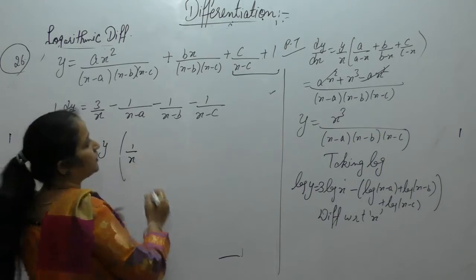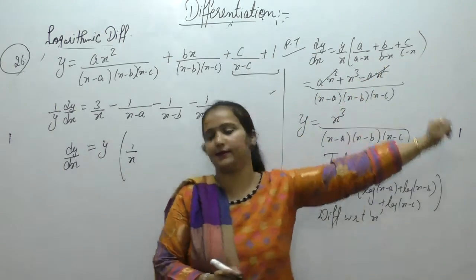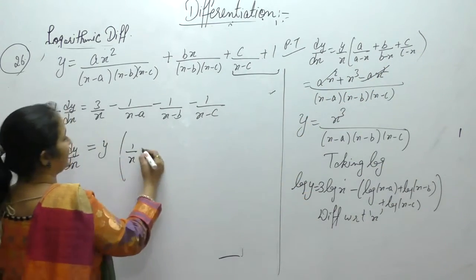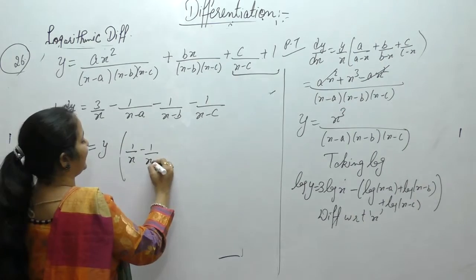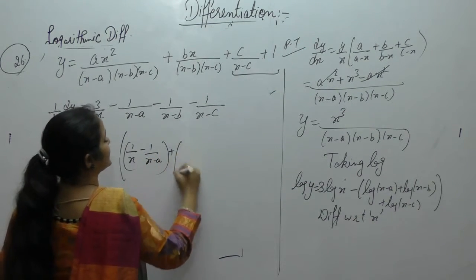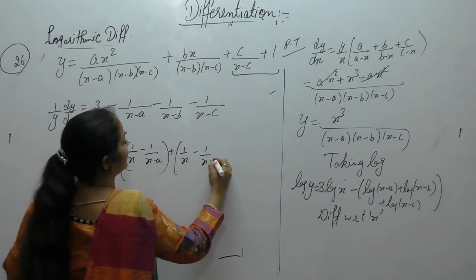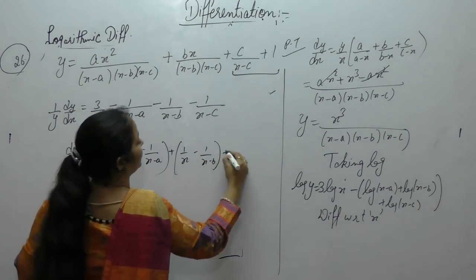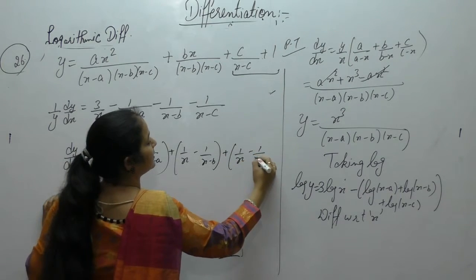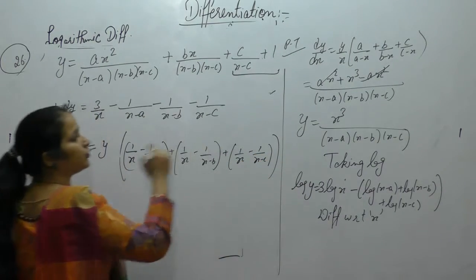So dy/dx = y times the expression. We can write 3/x as three separate 1/x terms, because we want a, b, and c here. So 3/x = 1/x + 1/x + 1/x, split into three parts.